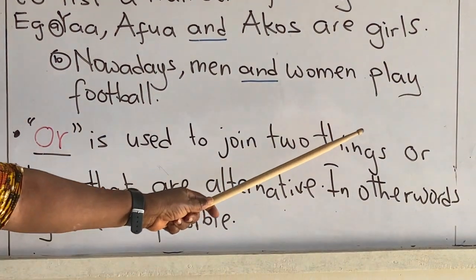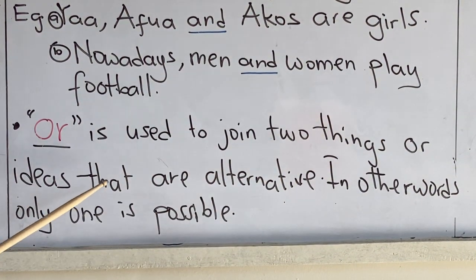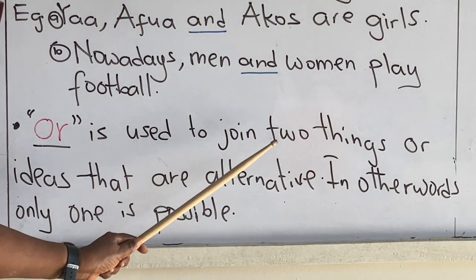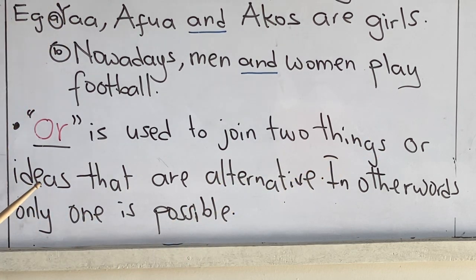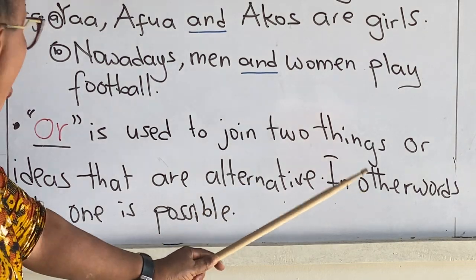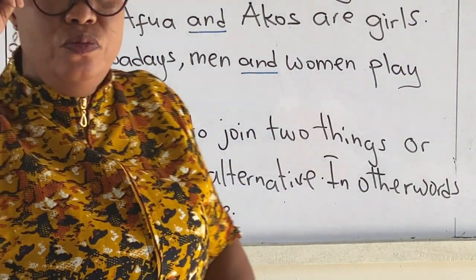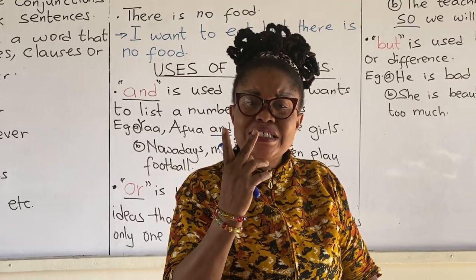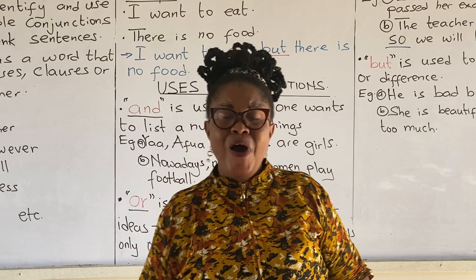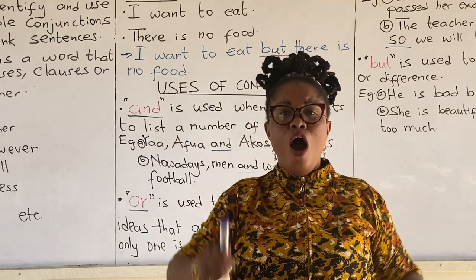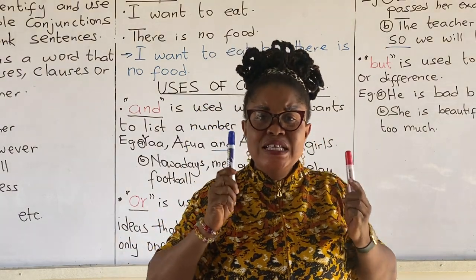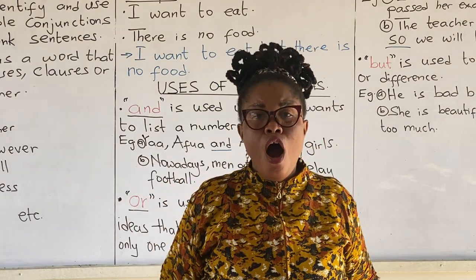Let's look at the conjunction 'or' and how it is used. 'Or' is used to join two things or ideas that are alternatives. In other words, only one is possible when two things are joined with 'or'. For instance, red or blue — it means either red or blue, not both.